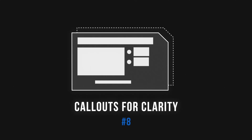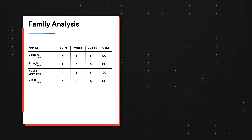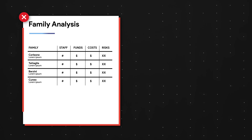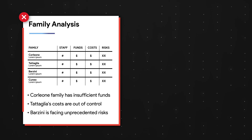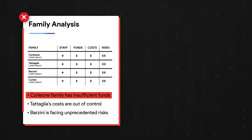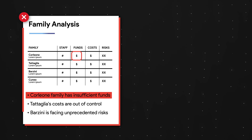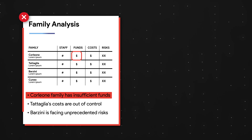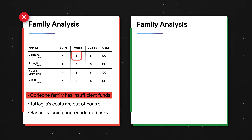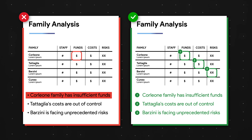Tactic number eight is to use call-outs for clarity. If we look at a slide with a table full of data on top and key takeaways below, our eyes read a bullet point but then have to mentally match it with the corresponding cell above. By simply adding three call-out boxes and numbering them, we ensure the linkage between messages is clear and tight.